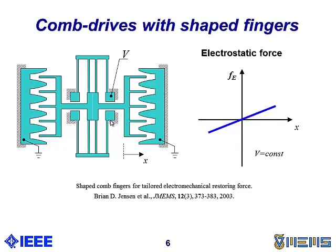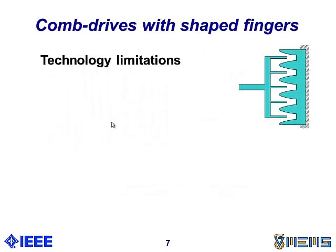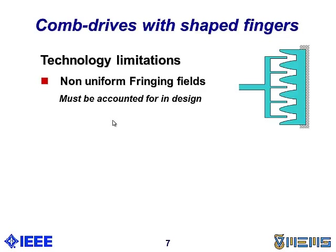Other than that, we haven't seen much use of this very brilliant idea and I guess the reason is that there are many limitations to this. First of all, the gap is not uniform. It means that the fringing fields are non-uniform. They're not constant. So in our design process we have to take account of the fringing fields.